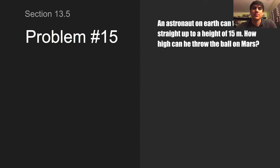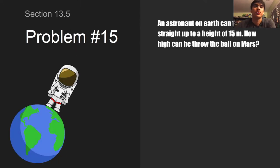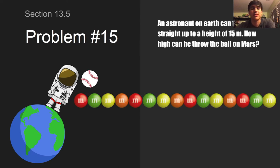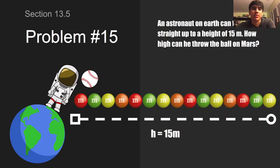Problem 15 asks: if an astronaut on Earth can throw a ball straight up at a height of 15 meters, how high would he be able to throw if he was on Mars?